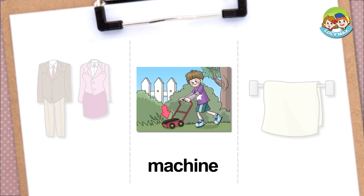Machine. A machine works by electricity or engine power. We use a machine to do work very easily. The boy uses a machine to mow the lawn. If he doesn't use the machine, it will be harder to mow.